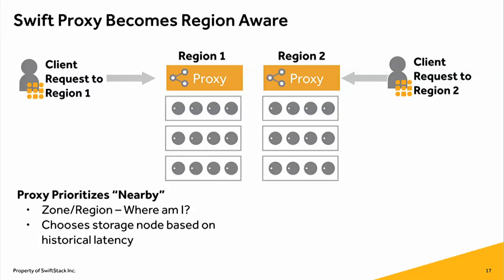Now as a client making a request, if you're trying to read data, the proxy has knowledge about where it is. When a request comes in, it's not going to send that user off to fetch data over a WAN link — it tries to fetch it as close as possible. It follows two rules: first, which region am I in and which zone am I in — something the operator specifies. Second, it keeps track of latency to each storage node and routes the request to the nearest storage pool.